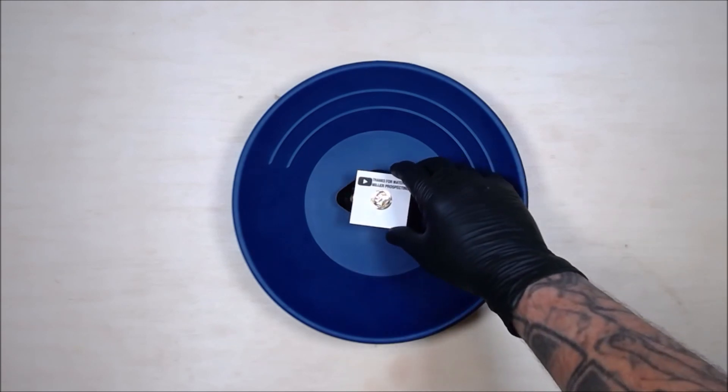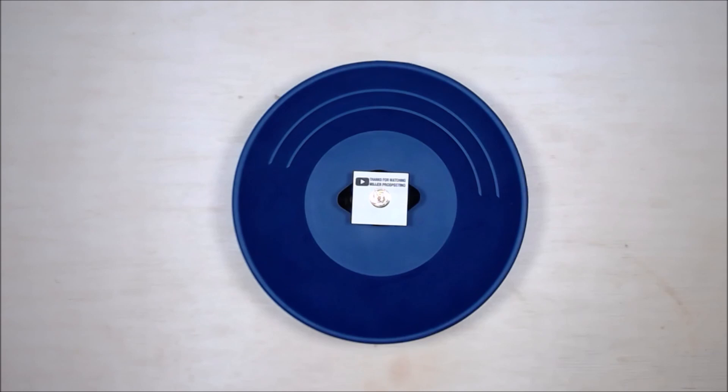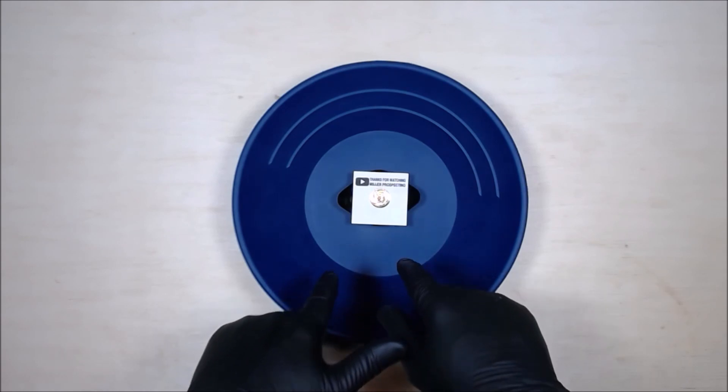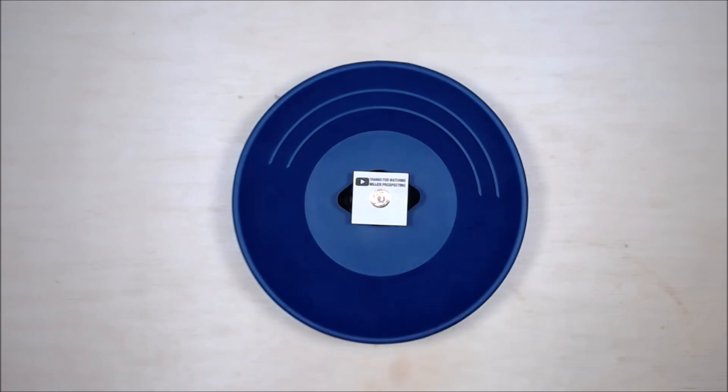And now all that's left is to give away a 24 karat gold plated dime. And that's going to go to Bob can see. So Bob can see, make sure you email me so I can send this off to you and to everyone else. Thanks for watching. Happy panning. And if you're not already a subscriber, make sure you hit the subscribe button below.